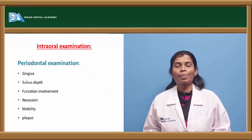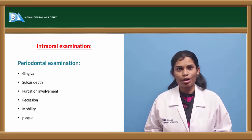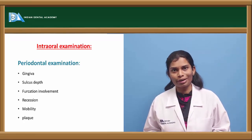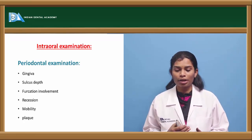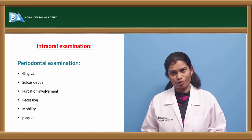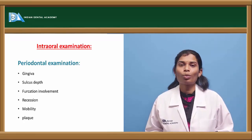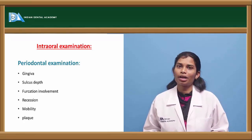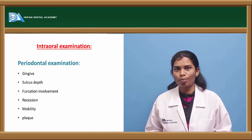Coming to intra-oral examination, this starts with periodontal examination including examination of the gingiva. Normal gingiva appears pinkish to coral red in color depending on ethnicity, whereas diseased gingiva appears slightly to fairly red. After examining the gingiva, assess sulcus depth — normal sulcus depth ranges from 0 to 3 mm. In diseased conditions the depth increases, indicating pockets. If depth is more than 3 mm, it should be recorded as a pocket.